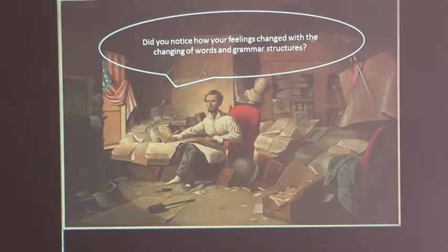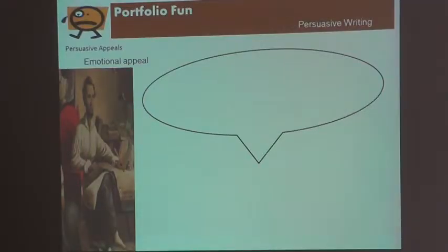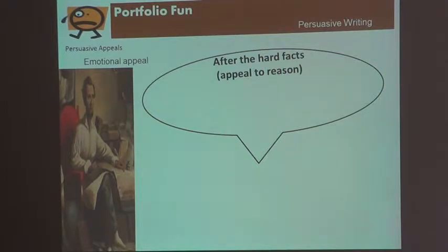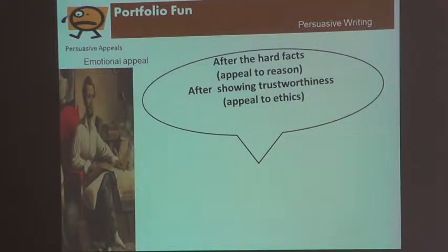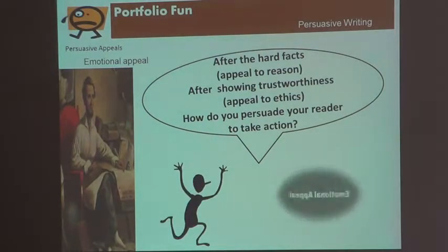Did you notice how your feelings change with the changing of words and grammar structures? In Unit 3, you will learn about persuasive techniques to get your audience to take action. Your lessons talk about appealing to reason using hard facts, statistics, experts. Last week we learned about ethical appeal — trustworthiness. Remember Alexander Gardner and the Civil War pictures, and how upset you got when he wasn't really trustworthy. So you appeal to reason, you appeal to ethics. How do you persuade your audience to take action? Emotional appeal.